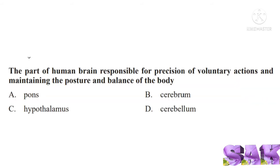Next question is the part of human brain responsible for precision of voluntary actions and maintaining the posture and balance of the body. As we hear the word body balance, cerebellum flashes in our mind. Yes, correct answer for this question is option D, cerebellum.